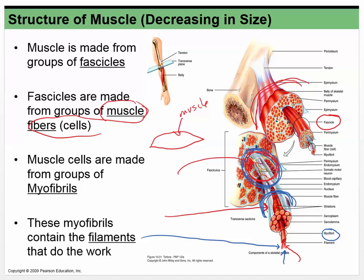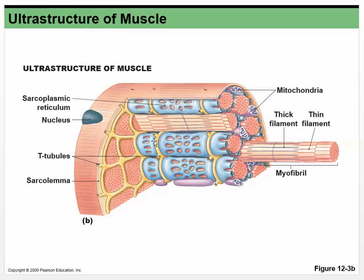If we look at a muscle cell — this whole thing is the cell, also called a fiber or muscle fiber — and we haven't talked about the striations yet, but you can kind of see them here. These little filaments here are arranged in a particular way. I want you to imagine that you see little red lines and blue lines here — these are the filaments arranged in a pattern that gives rise to the striations.